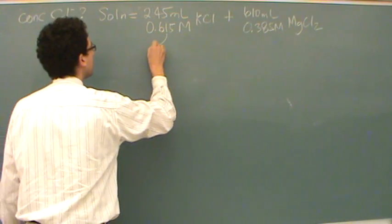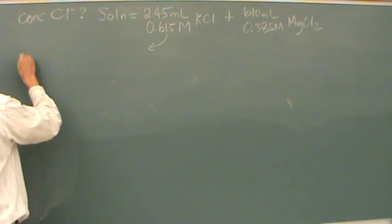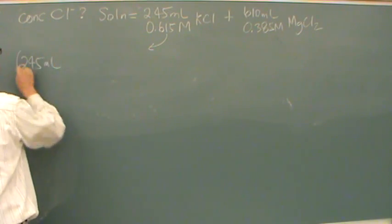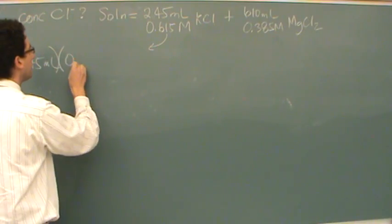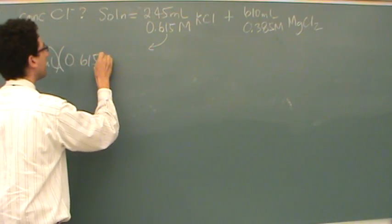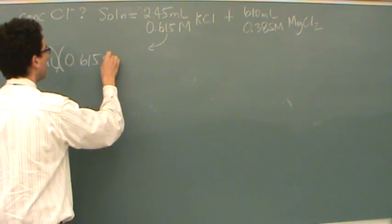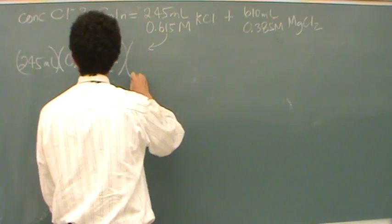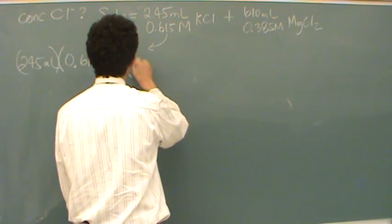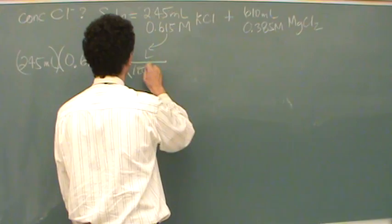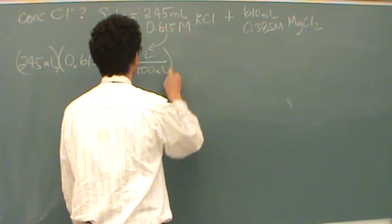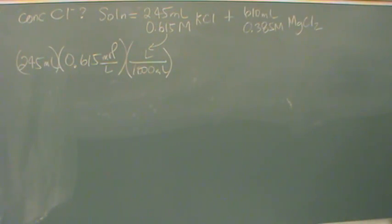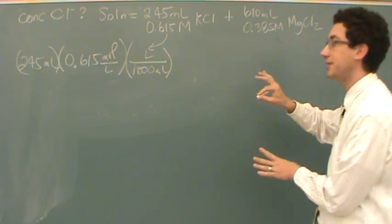So let's do the left-hand side first. 245 milliliters times 0.615 moles per liter. And then I'll just convert to get rid of the volumes. Okay, so that's the moles from that one.